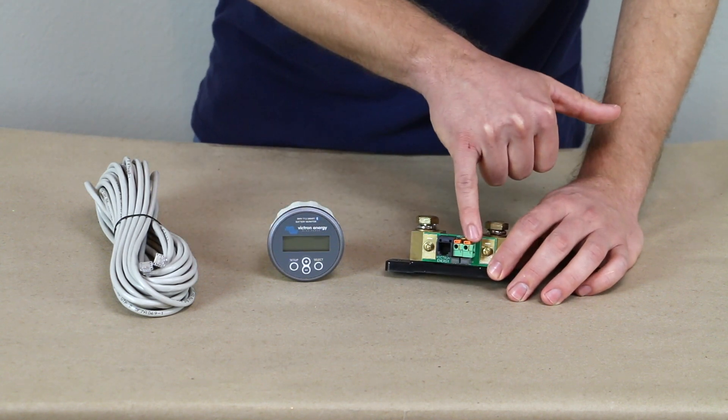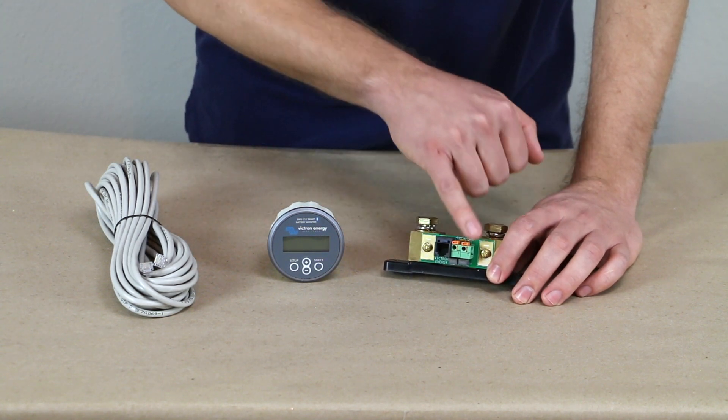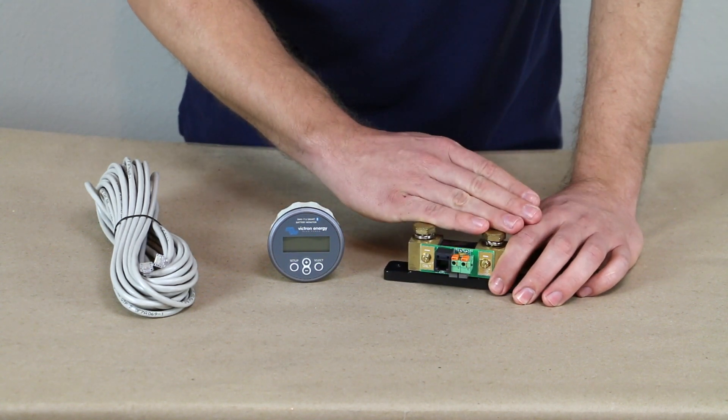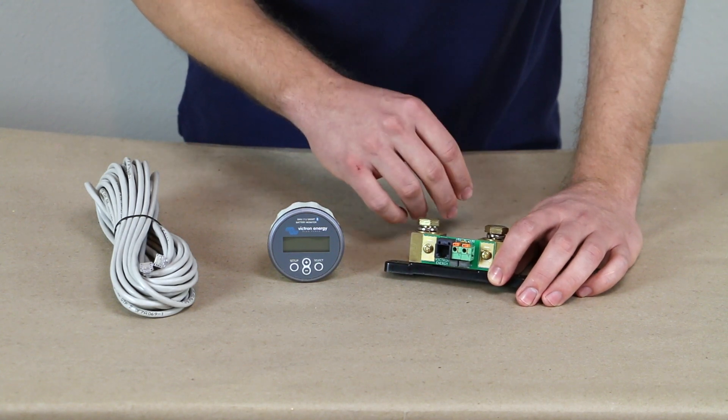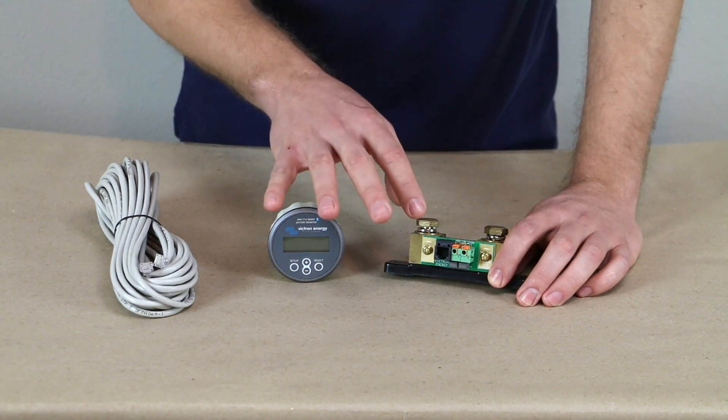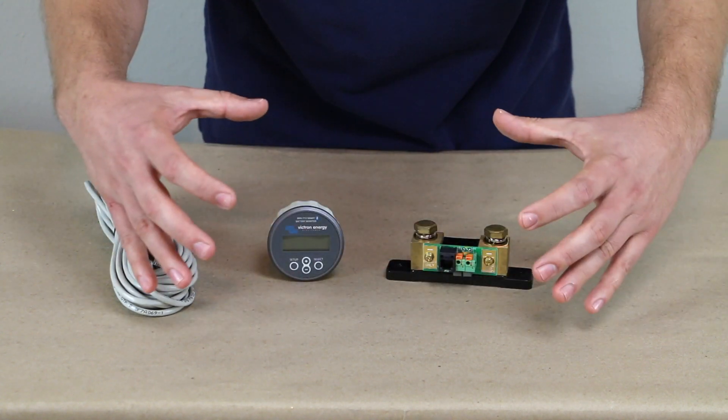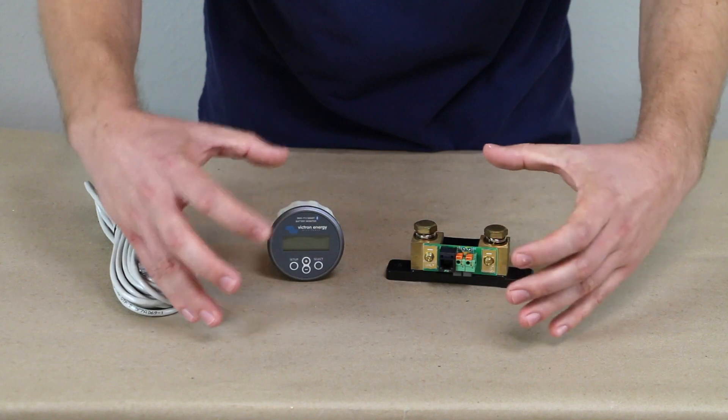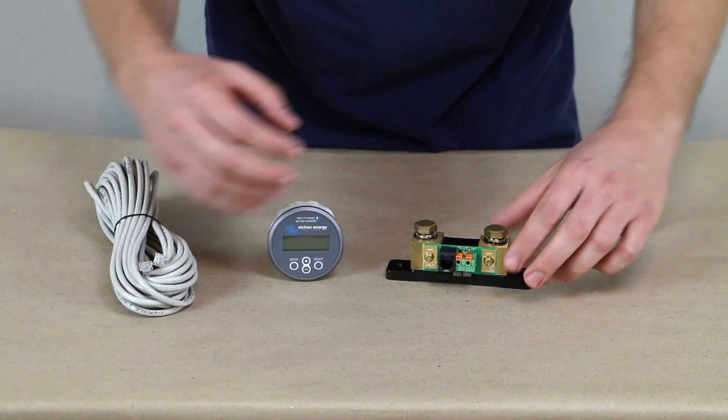We do have a second input here. This was introduced with these later models from Victron. You can measure not only your battery, but you can measure a second input. So that can be an engine battery voltage. It can be a midpoint voltage of your battery bank. So you would connect to the middle of your battery bank, and it's kind of like taking an average voltage of all the batteries.